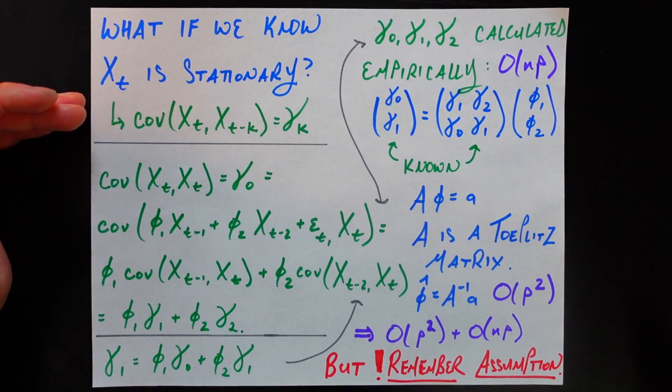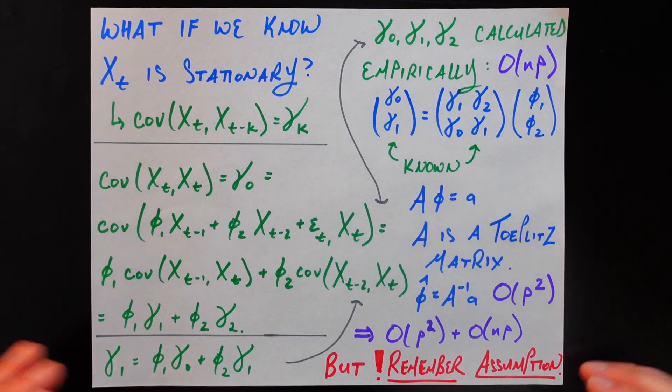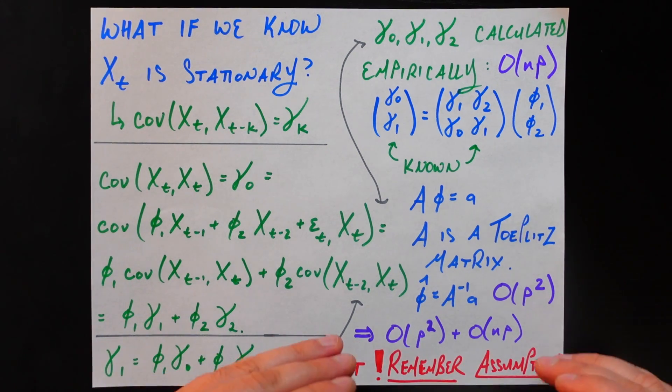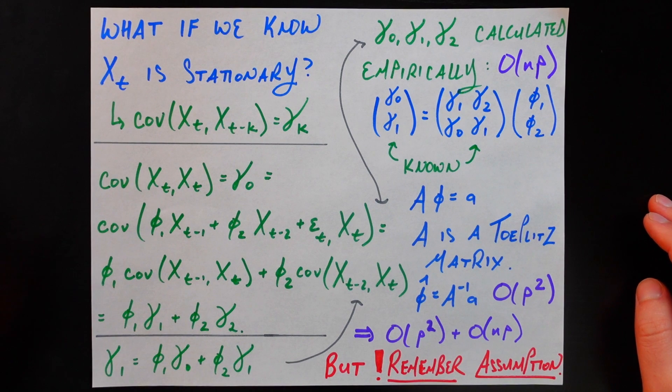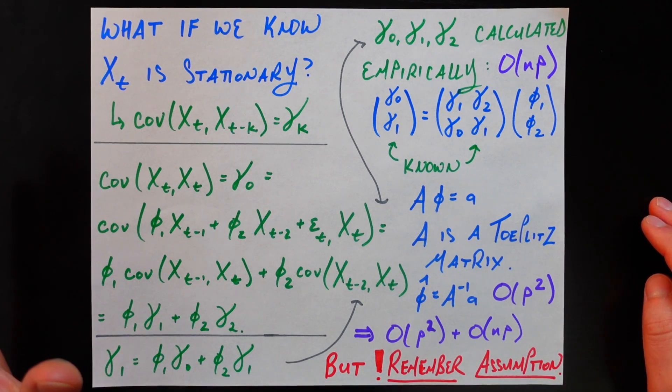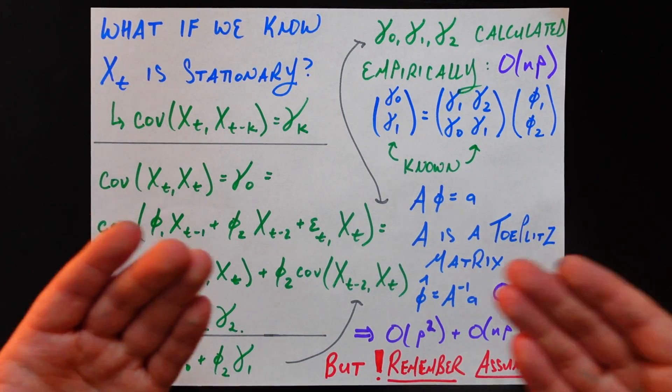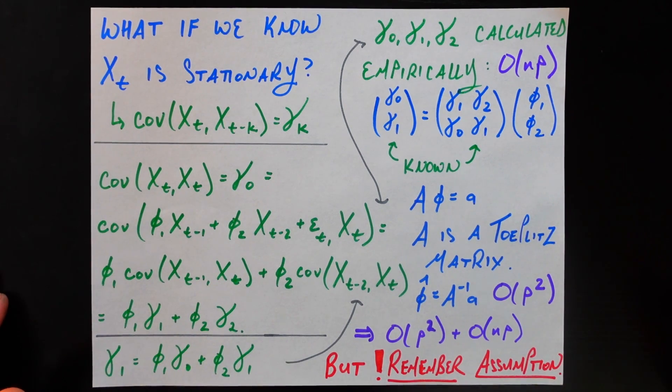But somehow if someone just tells you it's stationary, or if you're just willing to do a visual stationary check and trust that, then the Yule-Walker equations will be preferred to just using the usual OLS estimation. But if you are wrong about the stationary assumption, or if the time series is not stationary, yes this will be more efficient, it's going to give you garbage estimates, it's going to give you the wrong estimate, so it's kind of a non-starter at that point.